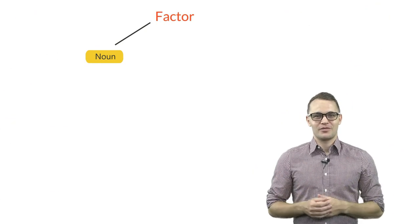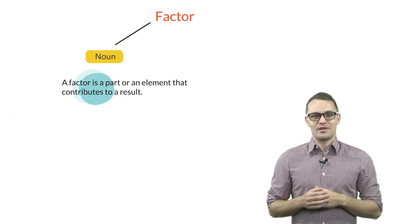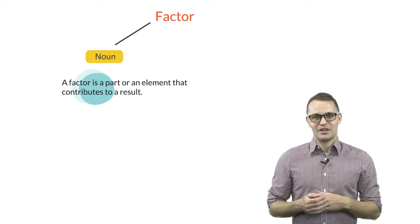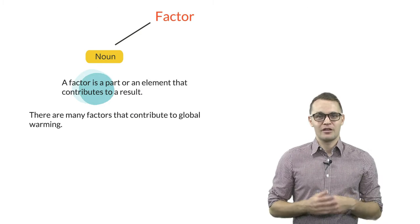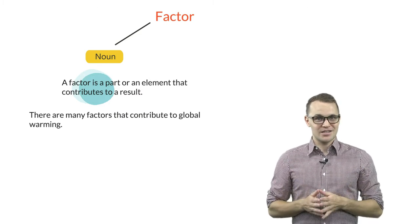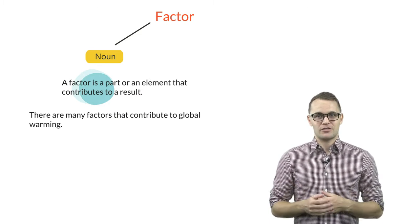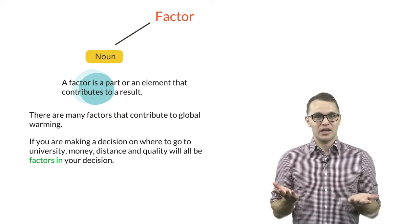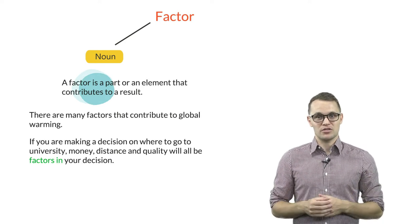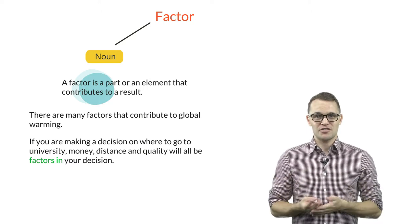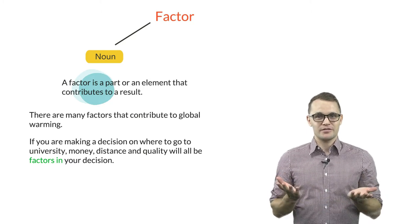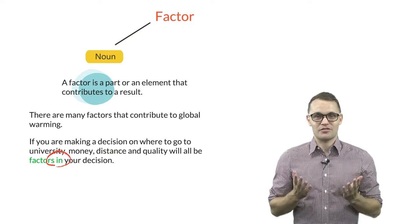Ok, the next word is factor. A factor is a part or an element that contributes to a result. For example, there are many factors that contribute to global warming. Normally when you are making a decision, you think about many different factors. For example, if you are making a decision on where to go to university, money, distance and quality will all be factors in your decision. Notice the preposition in is used after the word factor.